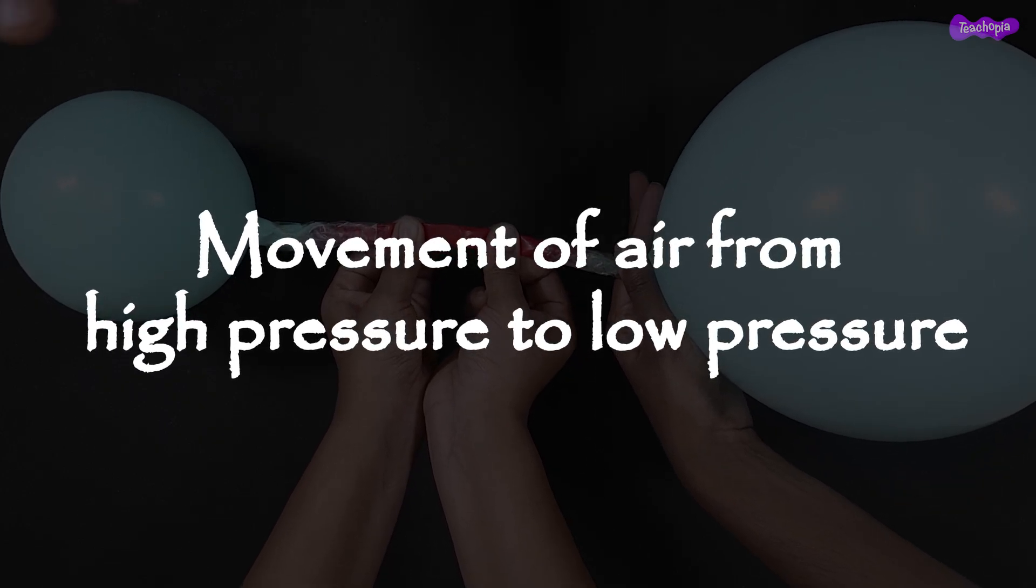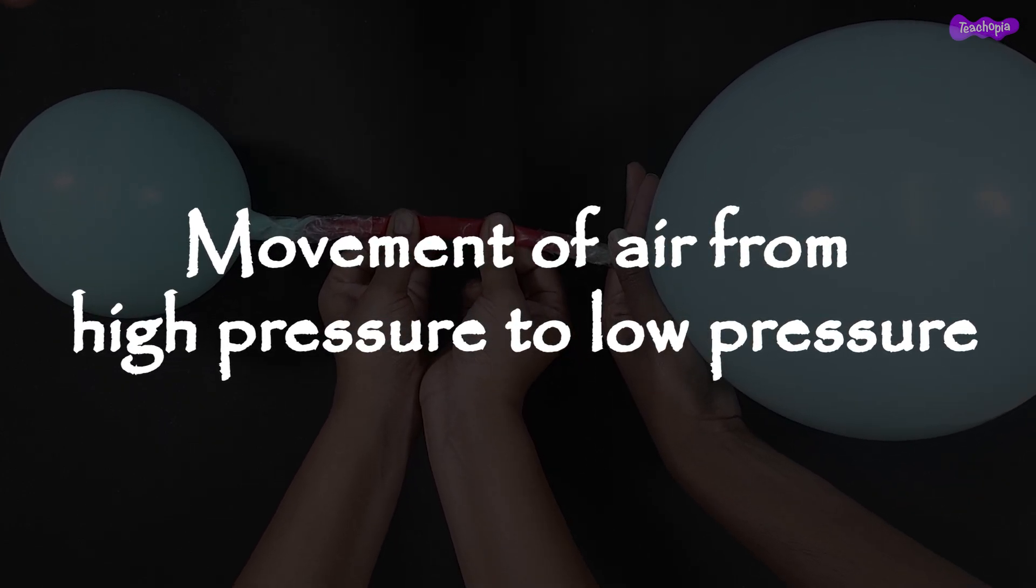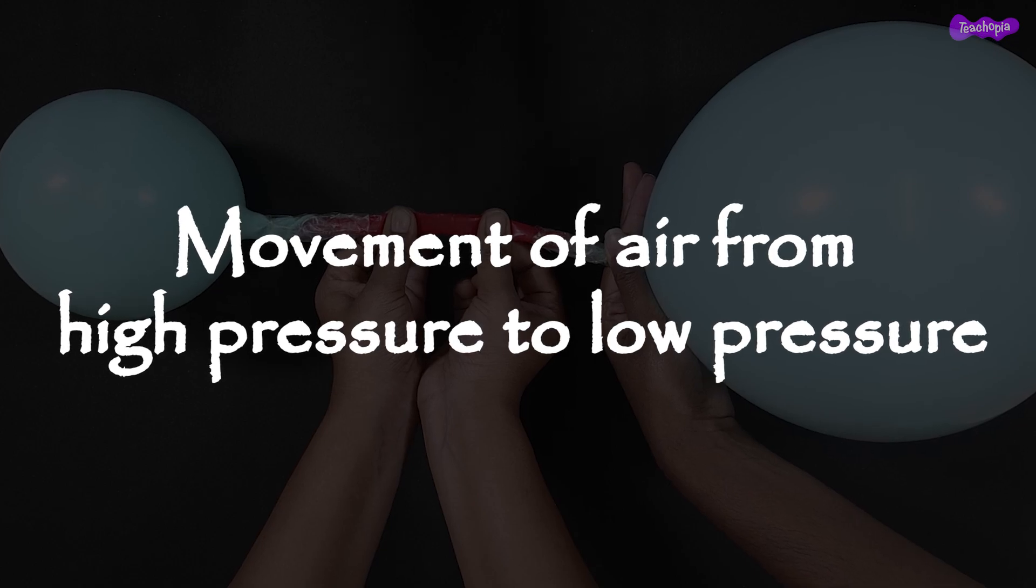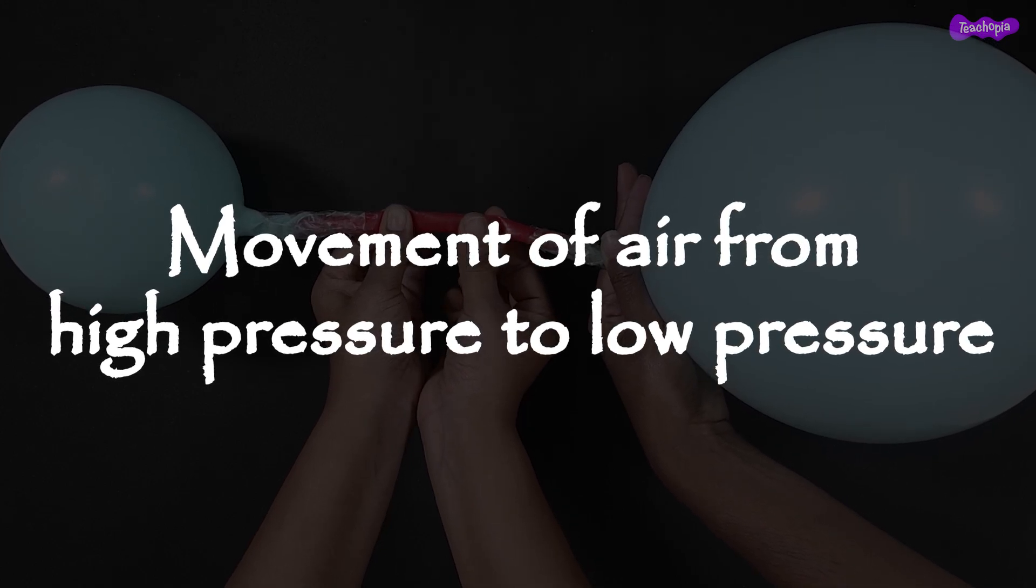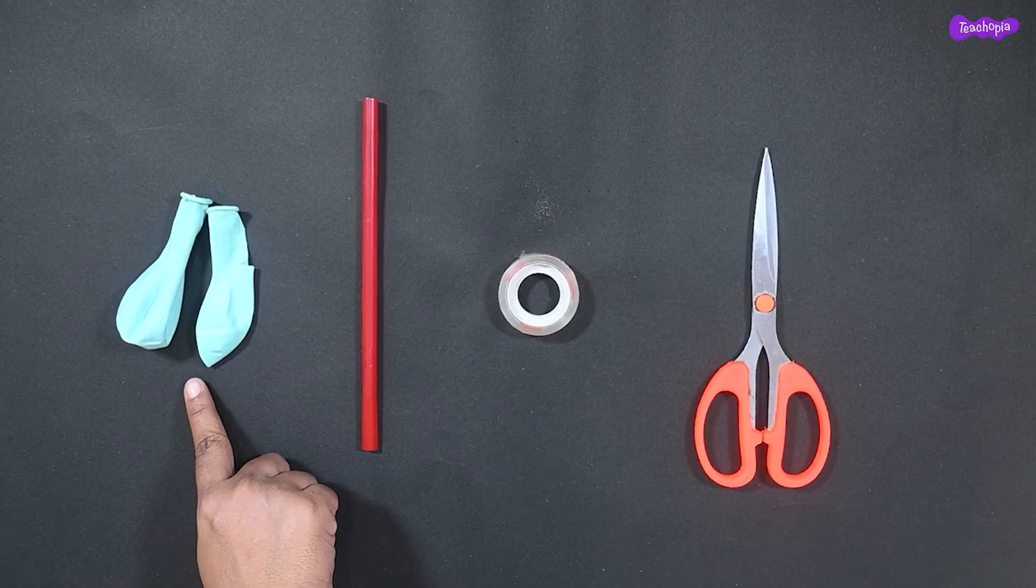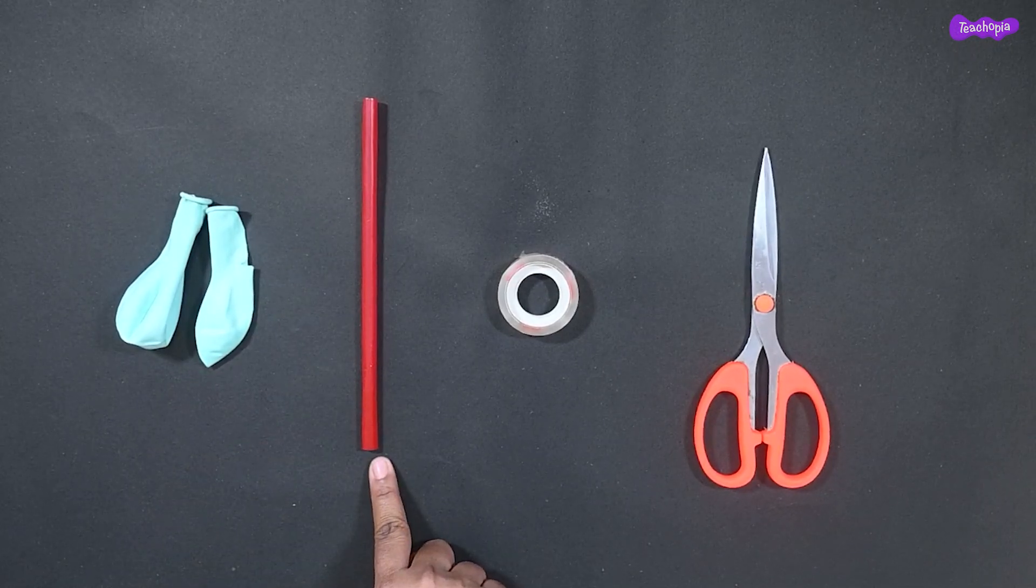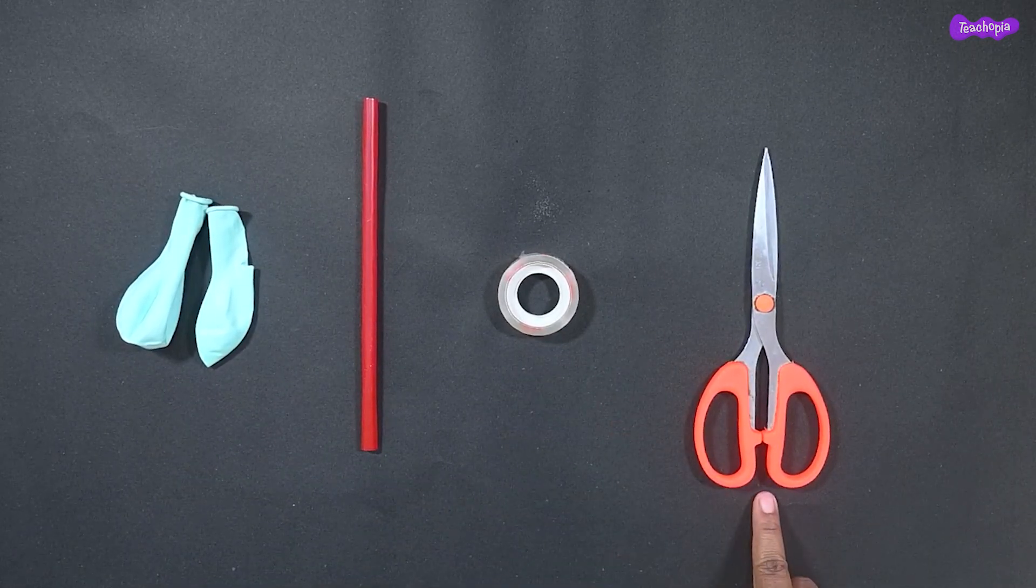This activity demonstrates how air moves from high pressure to low pressure areas. Materials required are two balloons, one straw, cello tape, and a scissor.